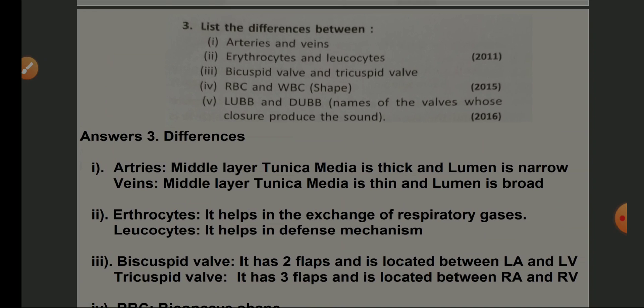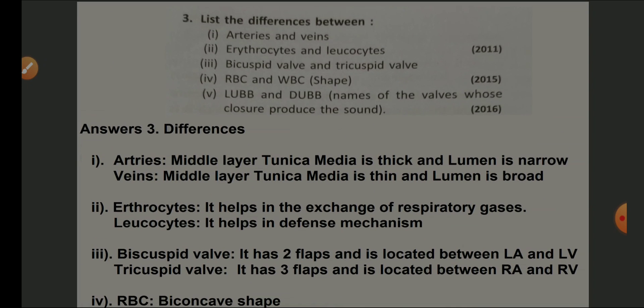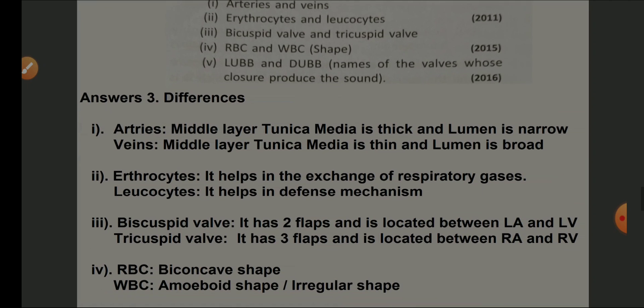Erythrocytes help in the exchange of respiratory gases; leukocytes help in the defense mechanism. Bicuspid valve has two flaps and is located between the left auricle and left ventricle. Tricuspid valve has three flaps and is located between the right auricle and right ventricle. RBC shape is biconcave; WBC shape is amoeboid or irregular.